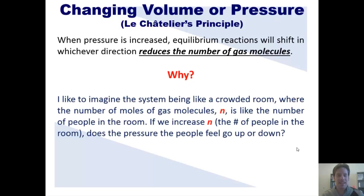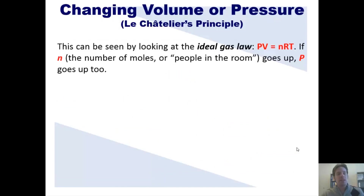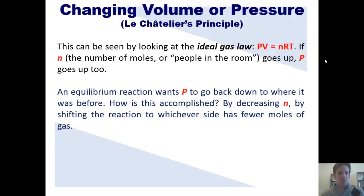When pressure is increased, equilibrium reactions will shift in whichever direction reduces the number of gas molecules. I like to imagine a system as a crowded room where the number of moles of gas molecules, N, is like the number of people in the room. If we increase N, the pressure goes up — everyone feels more crowded. To relieve that pressure, you shift the reaction in whichever direction gives fewer gas molecules. This can be seen in the ideal gas law, PV = NRT: if N goes up, pressure goes up. The equilibrium reaction wants P to go back down, so it decreases N by shifting toward whichever side has fewer moles of gas.